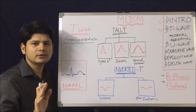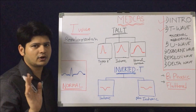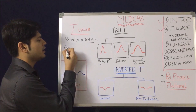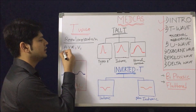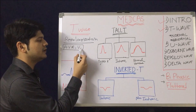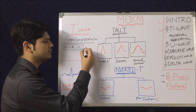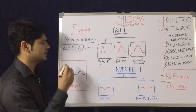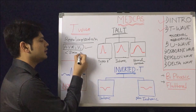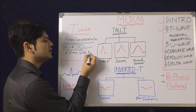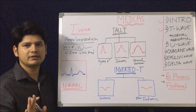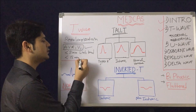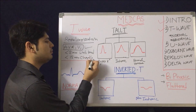We are going to discuss first what is a normal T wave, then what is an abnormal T wave. The normal T wave is generally upright in all leads except lead AVR and lead V1. In lead AVR and V1, an inverted T is a normal phenomenon. The T wave amplitude in the limb leads should be less than 5 mm, and in the chest leads V1 through V6, less than 15 mm.